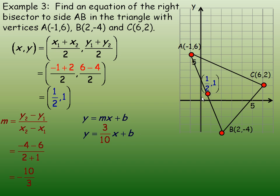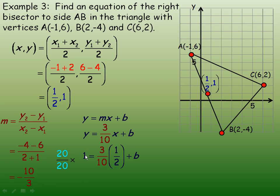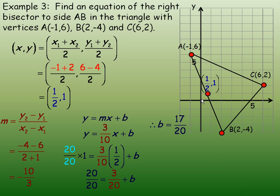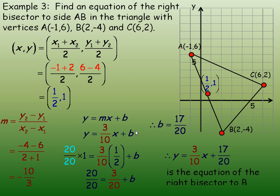Now we need the y-intercept. We can tell it's probably somewhere between 0 and 1. We know the point (1/2, 1) is on this line, so we substitute x equals 1/2 and y equals 1. Now 3/10 times 1/2 is 3/20. To get a common denominator, multiply 1 by 20/20, giving 20/20. So 20/20 minus 3/20 gives b equals 17/20. That is between 0 and 1, as expected. So the equation is y equals 3/10 x plus 17/20.